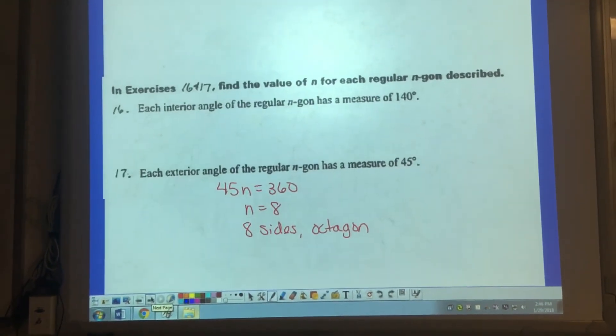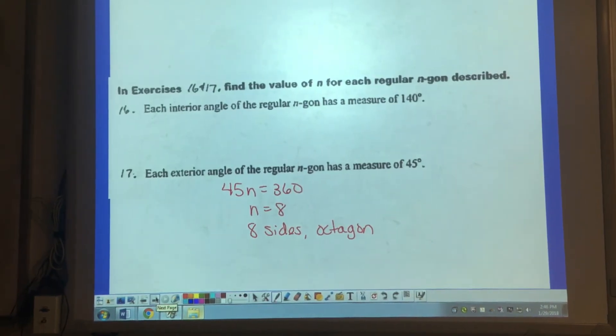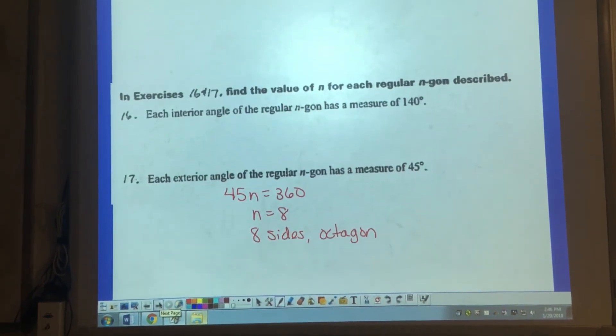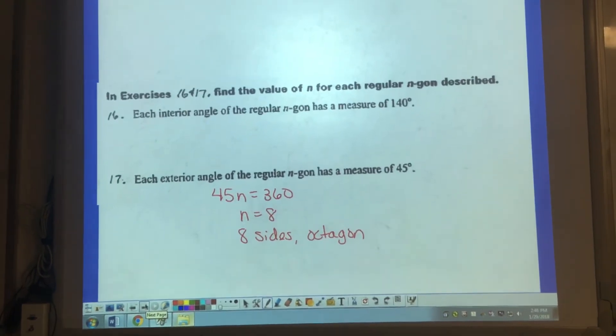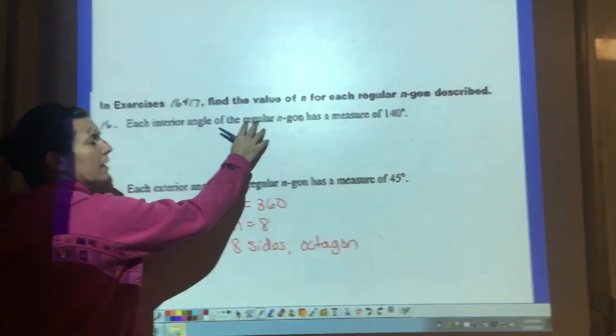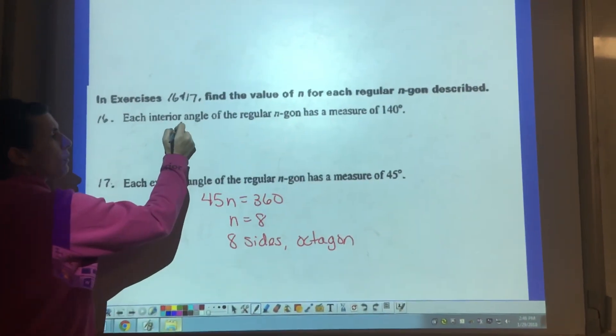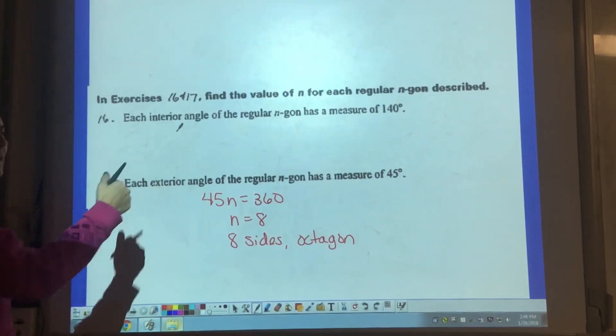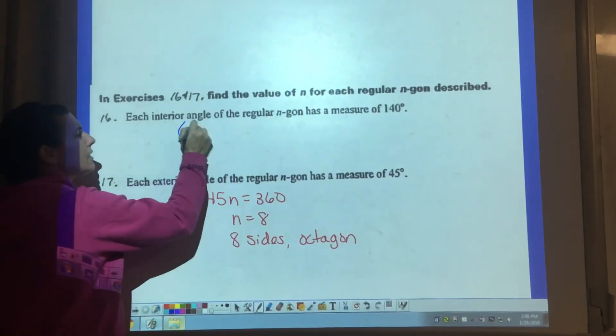16 and 17 word problems. Number 16 says each interior angle of a regular n-gon has a measure of 140. Well, we're looking first again at regular n-gon. We're trying to figure out how many sides it has. So we're going to use that same formula.